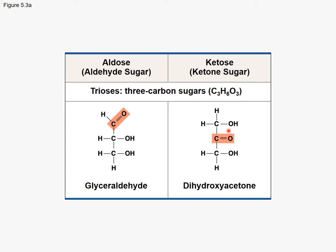A ketose is a sugar that has a ketone functional group. The difference between an aldehyde and a ketone is that an aldehyde is usually found on the end, with the carbon double bonded to oxygen, and attached to this carbon is another carbon and a hydrogen. For the ketone, attached to the carbon double bonded to oxygen are two carbons. This is called dihydroxyacetone.